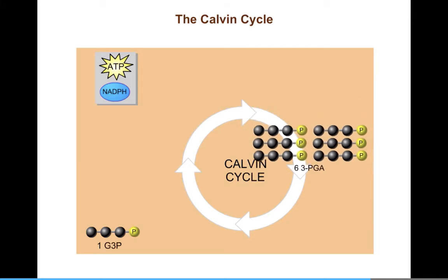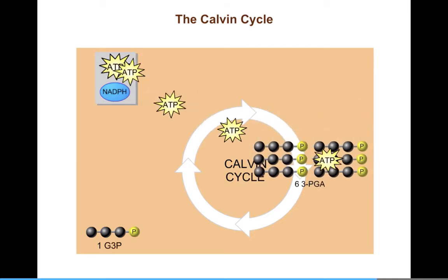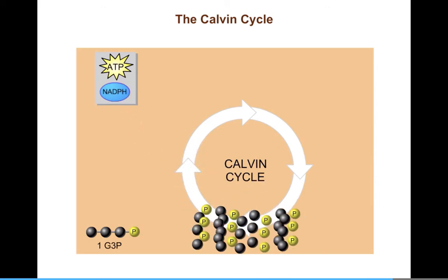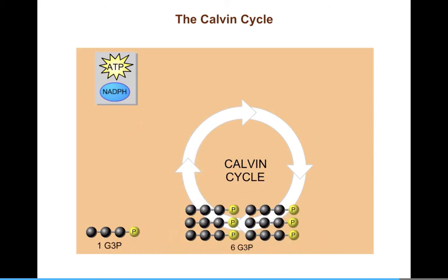To make each G3P, the Calvin Cycle consumes nine ATP molecules and six NADPH molecules. These are regenerated in the light reactions.